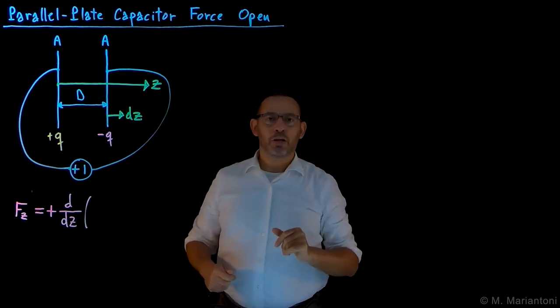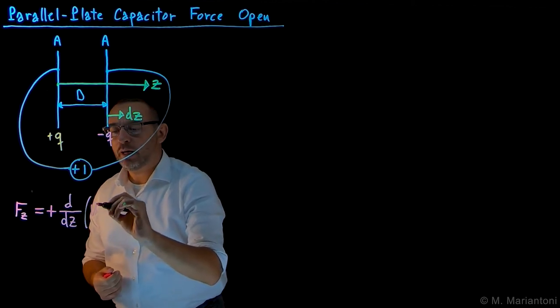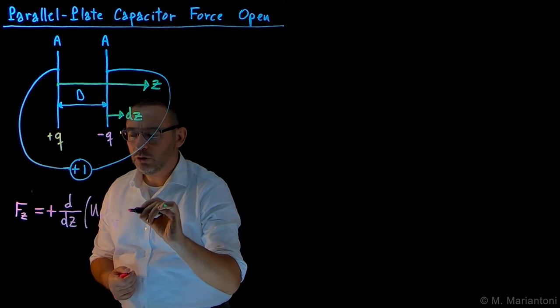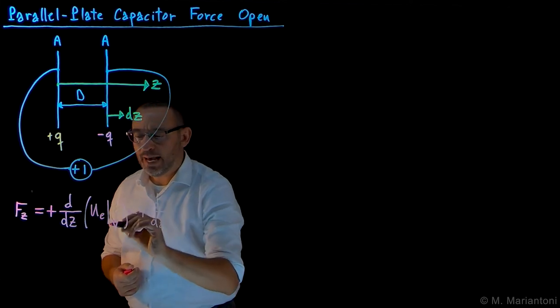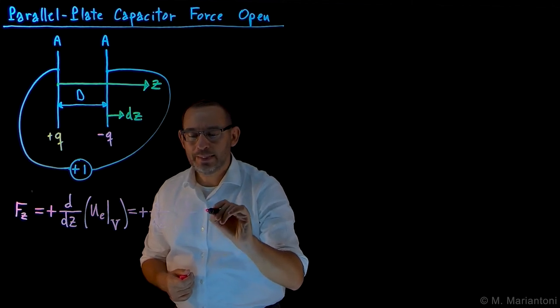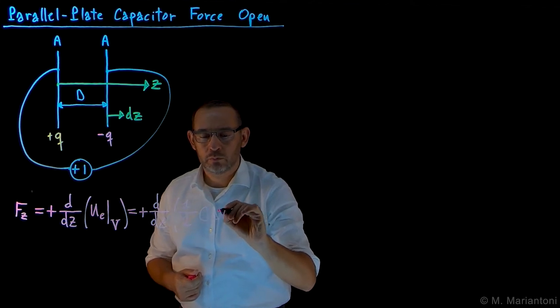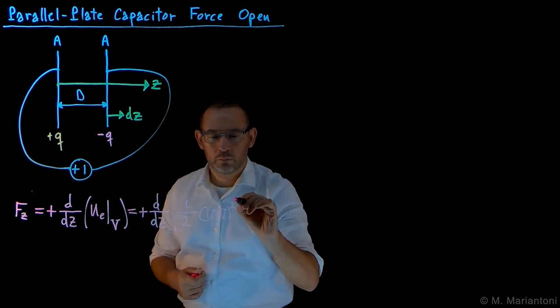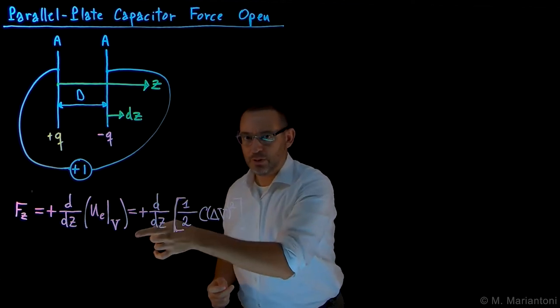Clearly, since we are considering an open circuit, we need to compute this for u_E at constant V. Since V is constant, this is going to be plus the derivative with respect to Z of this energy for V constant. The one we want to use in this case is simply one half C, the capacitance, delta V quantity squared. Because V is constant.